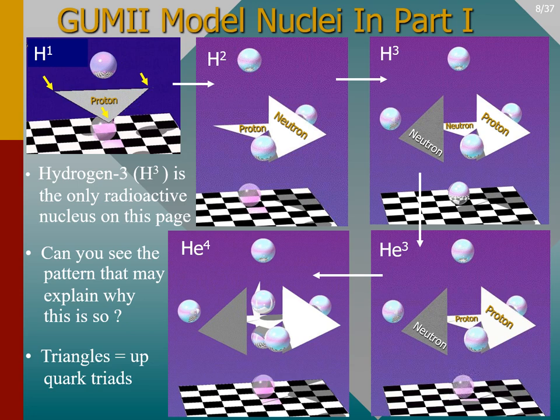So what makes the hydrogen-3 nucleus unstable and therefore radioactive? Let's look ahead at the 3D GUMMI models that will be used in part two to see if that gives us any additional help in finding a pattern.